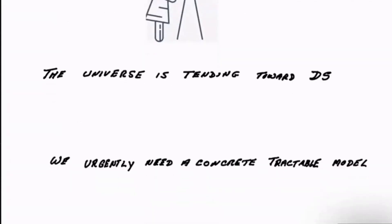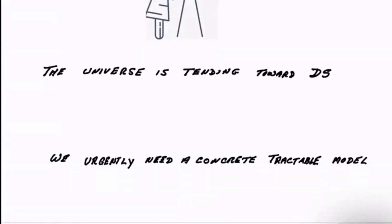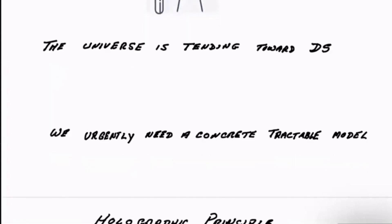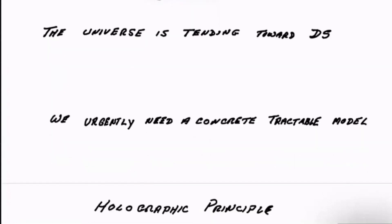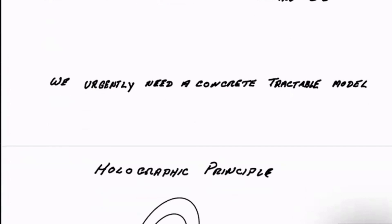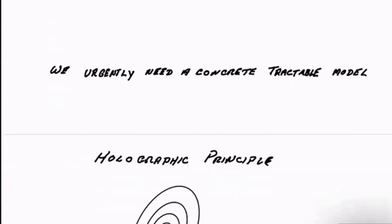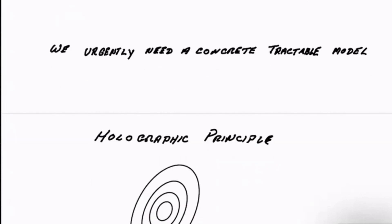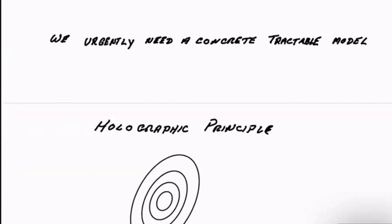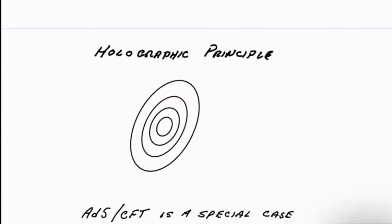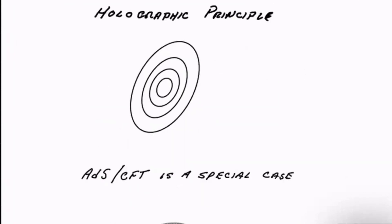We live in something which in time will become very close to de Sitter space. Of course, it could be wrong, but that's the way it's going now. We urgently need a concrete, tractable model to investigate these kinds of claims and to investigate the nature of the connection between de Sitter space, cosmological space-time, and quantum gravity, quantum information, all the things that we've been studying in another context. So let me begin with the holographic principle.